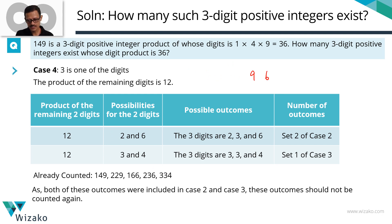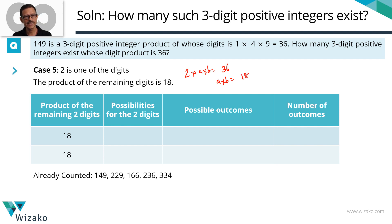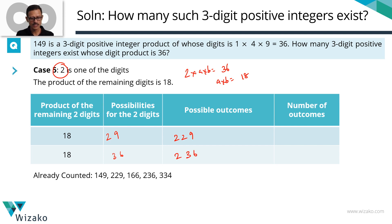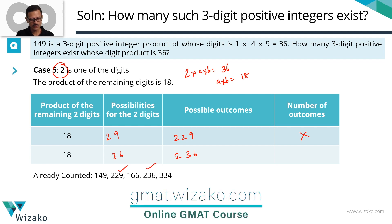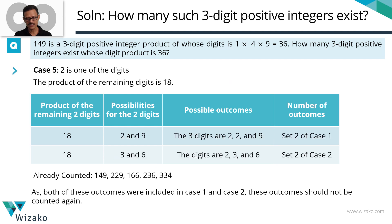Case 5: one of the digits is 2. The product of the other two must equal 36 ÷ 2 = 18. Possible pairs: (2, 9) and (3, 6). This gives digit sets 2, 2, 9 and 2, 3, 6 — both already counted in previous cases. So Case 5 also adds zero new numbers.